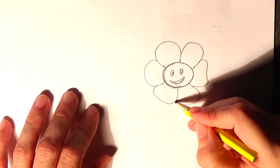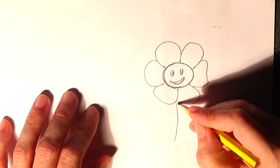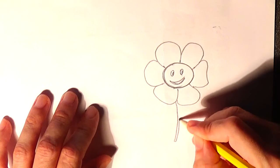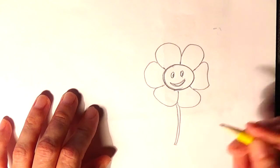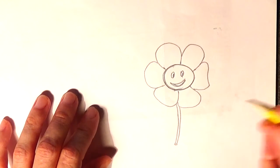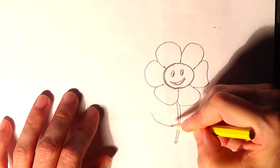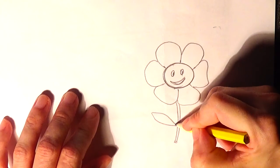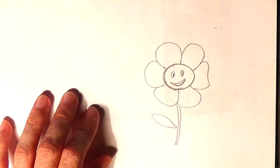Now, let's draw the stem like a double line. Like this. And a small leaf like this.